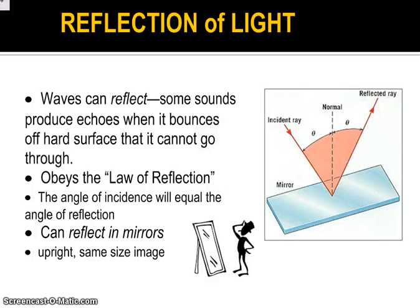Now if we begin to look at how light and sound can interact with other objects, not just themselves, we're going to deal with some words that can become confusing. Those three words are reflection, refraction, and diffraction — incredibly confusing, not because of their definitions, but because they all sound the same. The goal here is for you to become familiar with those words and hopefully be able to somewhat identify them.